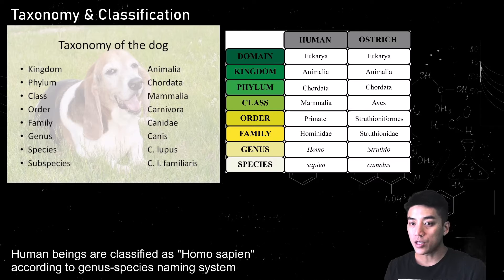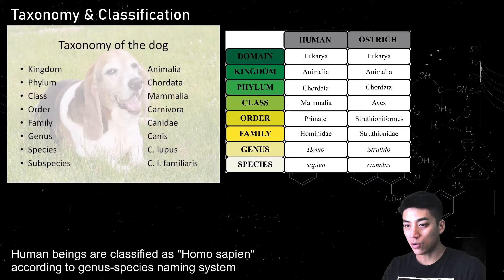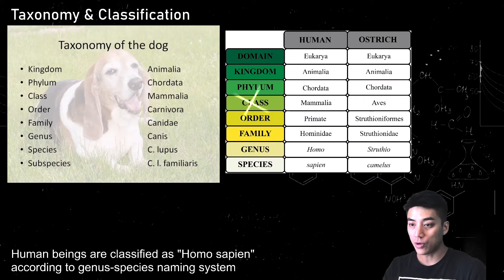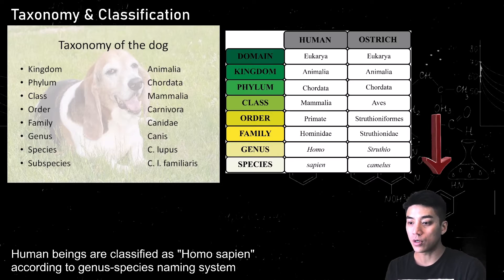Here's the taxonomy of dogs, humans, and ostriches. You can see there are similarities — humans, ostriches, and dogs are all in the animal kingdom and all in the chordata phylum, which means we all have a vertebrae. Humans and dogs are both mammals, but ostriches branch off — they belong in a different class, the Aves, which means bird. As you go down, you become more and more specific.